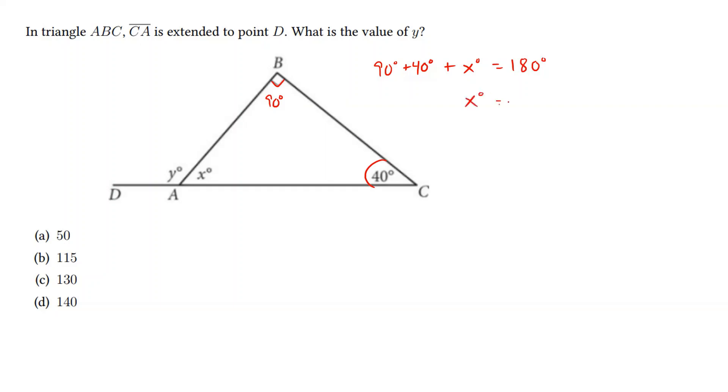Thus, we can see that x degrees has to be 50 degrees. Since we want the value of y, and we see that this is a flat line, the sum of x degrees and y degrees is going to be 180 degrees. Since we know that x degrees is 50, this means y has to be 130.